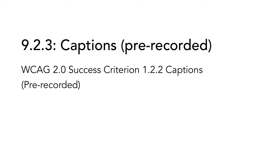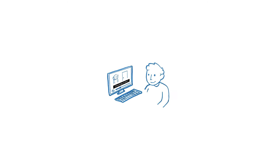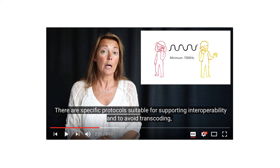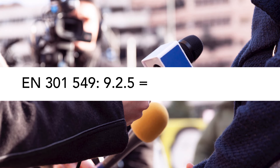9.2.3, captions pre-recorded, is based on WCAG 2.0 success criterion 1.2.2. Captions are a text version of the spoken dialogue and also provide information on who is speaking and explain other sounds in a video. Captions are used to give hearing-impaired users equivalent information as other users get from listening to the video. If the website has synchronized media — for example a video with an audio track — the media should have captions. If there is a text version of the information easily accessible in connection to the synchronized media, you do not have to provide captions, but it is recommended to do so anyway. This requirement is only relevant for pre-recorded media; if you have a live stream, this is covered by section 9.2.5, which means success criterion 1.2.4 in WCAG.